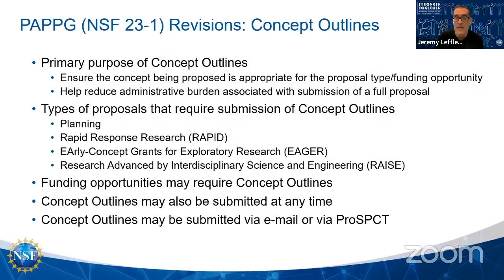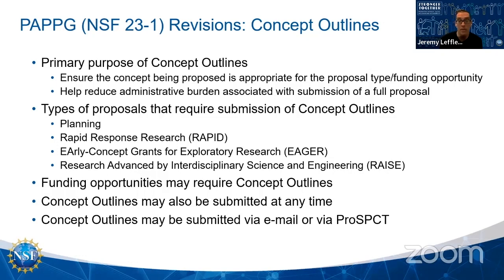We have also added a new type of submission to the PAP Guide called a concept outline. These have been in use at NSF, but we've now formally introduced it into the PAP Guide. It is a concise summary of a project idea that contains information about the prospective PIs, the relevant NSF organizational units, project title keywords, and a brief narrative of the idea that fits any special criteria for a proposal type or funding opportunity.